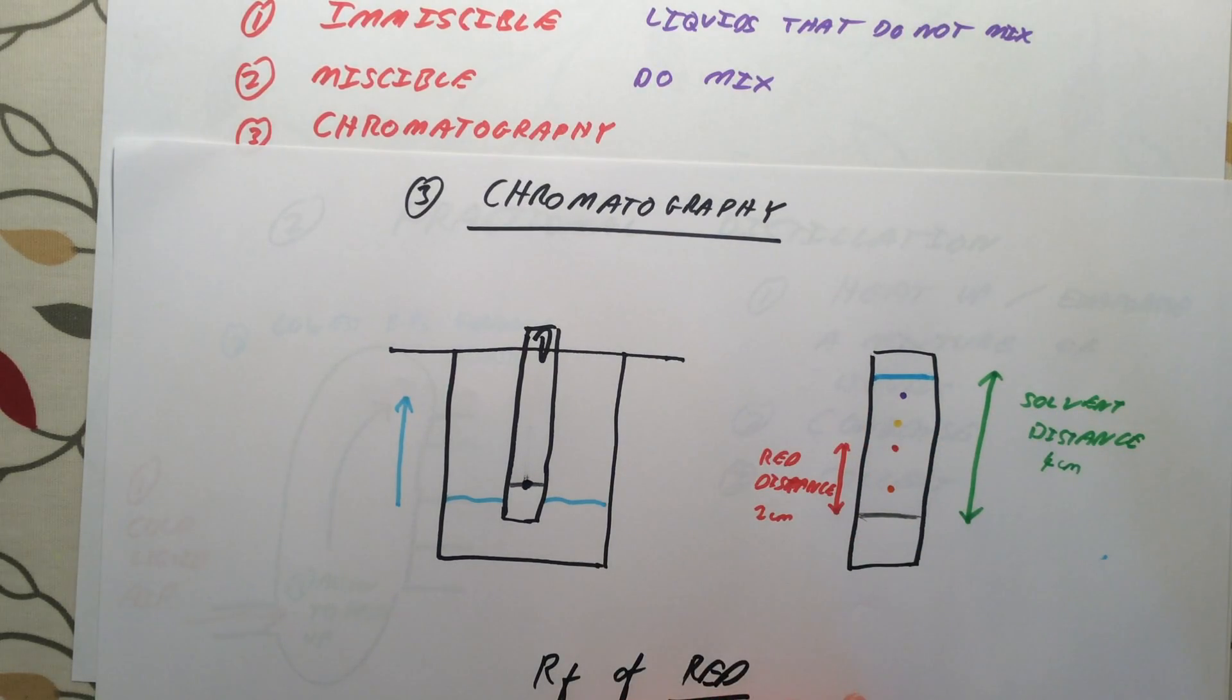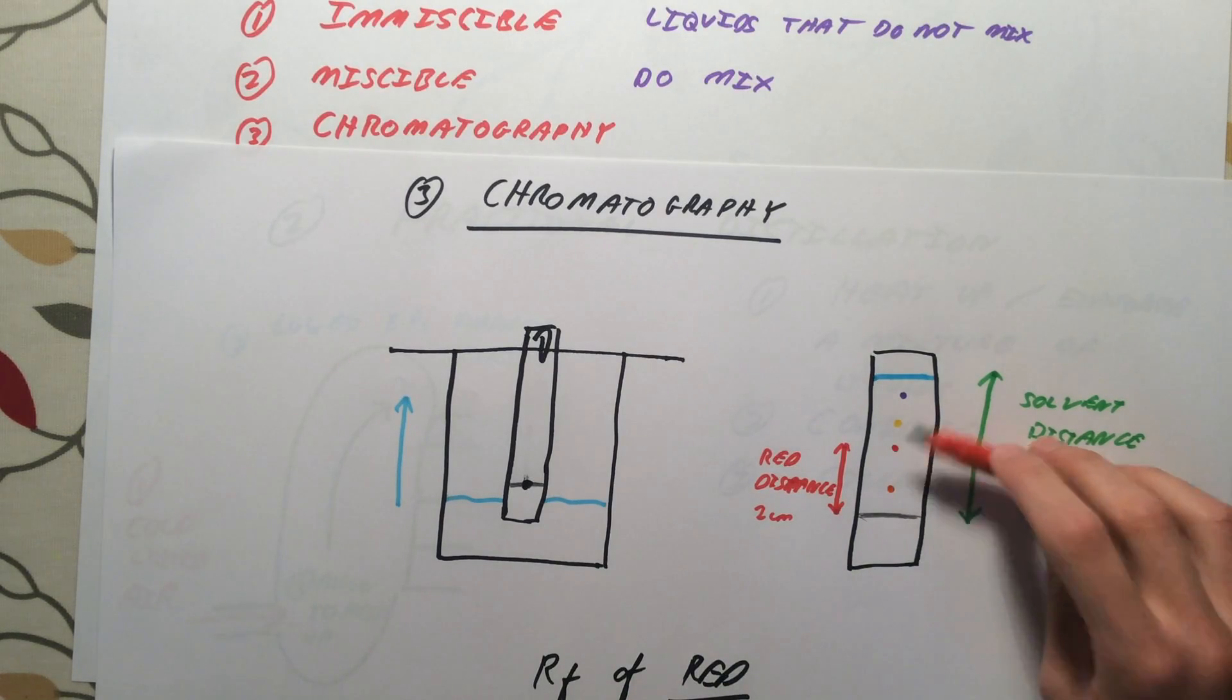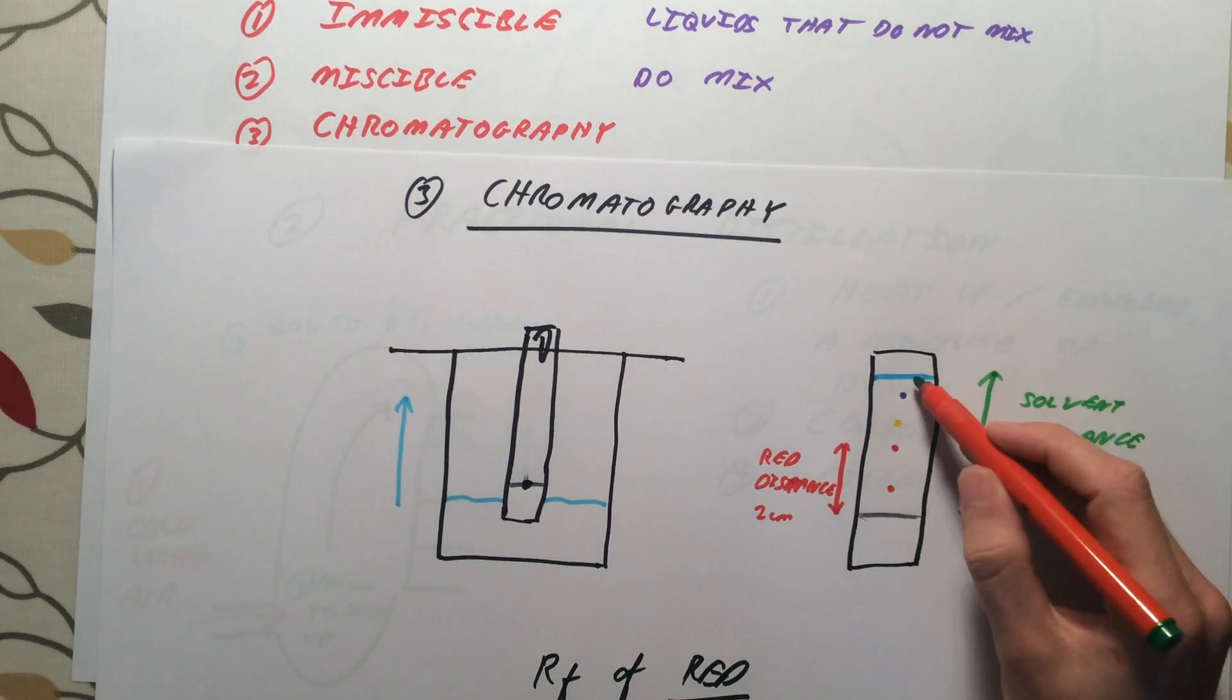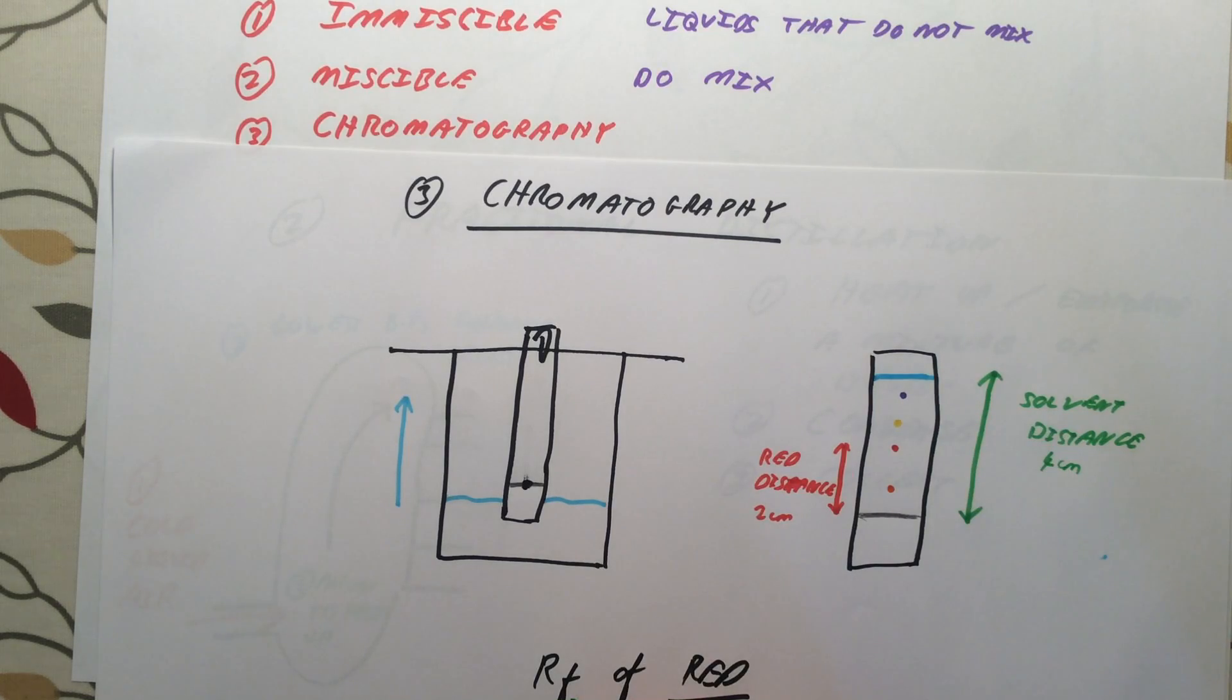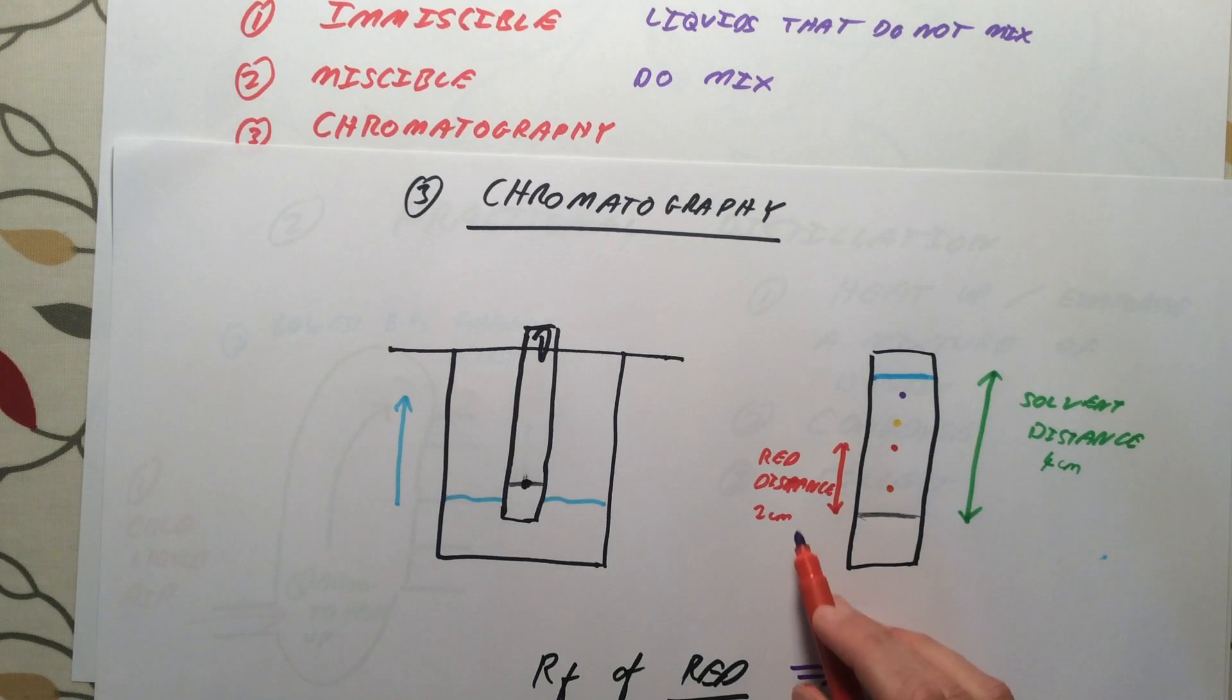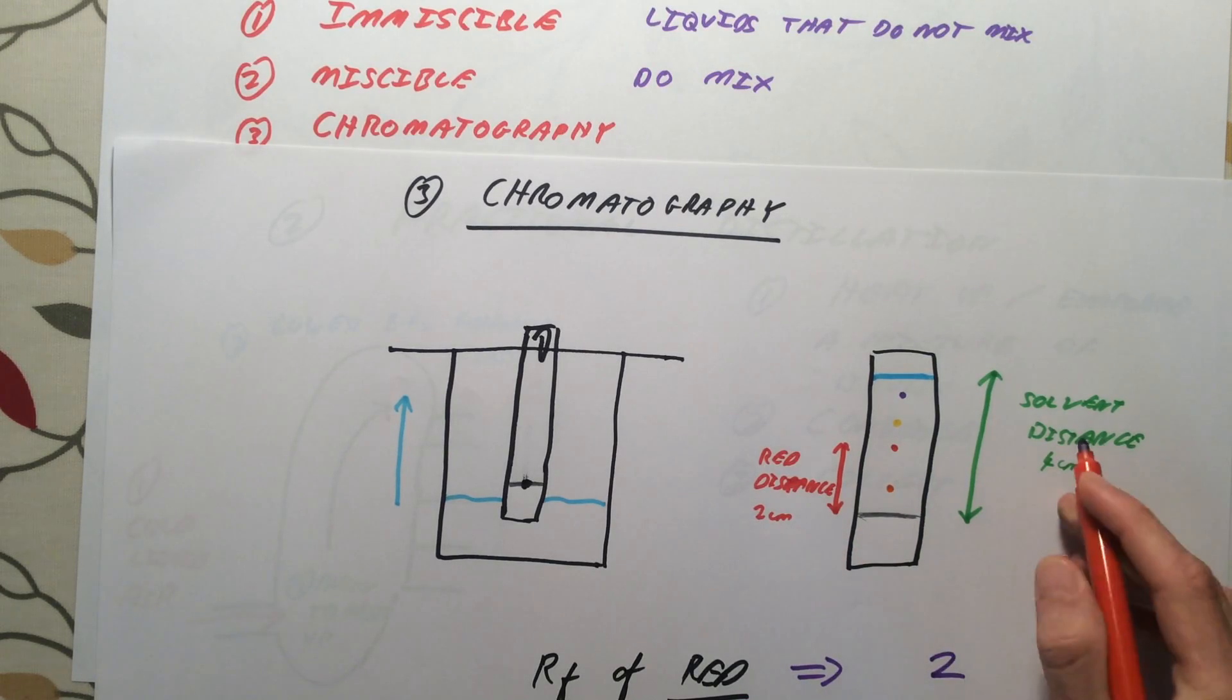To calculate the retention factor of red, what the retention factor means is the ratio at which the colour travels up your filter paper compared to the solvent. If the retention factor was 1 for red, the red would have travelled at exactly the same speed as the solvent, so the red line would be bang on there. If the retention factor was 0, the red would not have moved at all. It would have stayed down here. As it is, it has travelled halfway up, 2 centimetres compared to the 4 centimetres that the solvent has travelled. To calculate the retention factor, we need to do the following calculation. You need to see the distance that the red has travelled, which in this case is 2, divided by the distance the solvent has travelled 4, and that is going to give us 0.5.